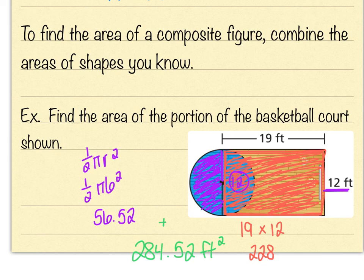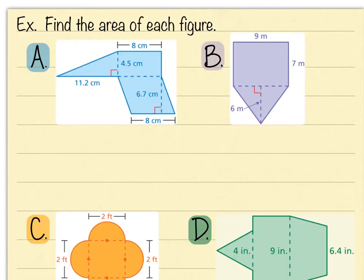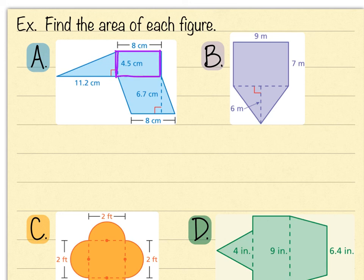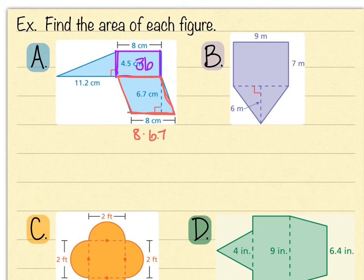The next composite figure has three shapes: a triangle, a rectangle, and a parallelogram. Starting with the rectangle: the base is 8 and the height is 4.5, so 8 times 4.5 gives an area of 36. For the parallelogram, the formula is also base times height — the base is 8 and the height is 6.7 (height always meets the base at a right angle), so 8 times 6.7 gives 53.6.